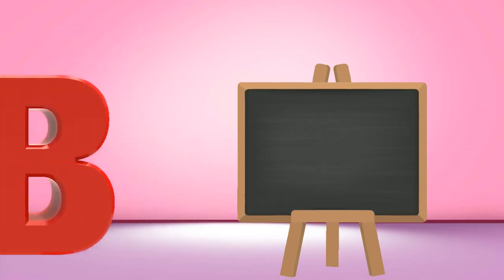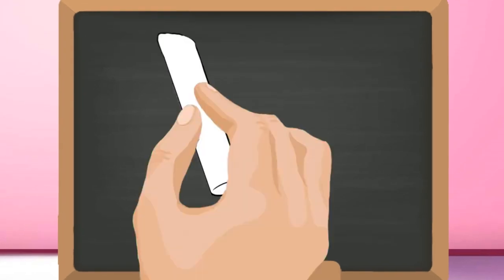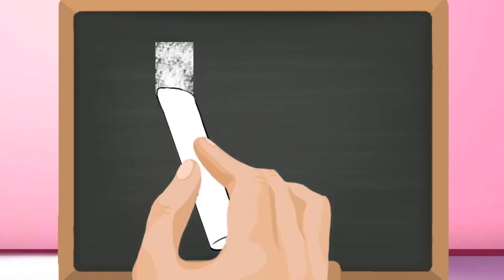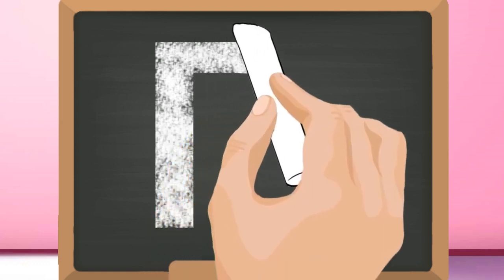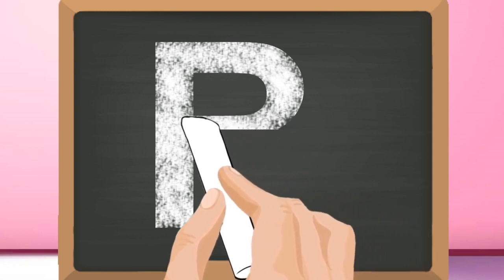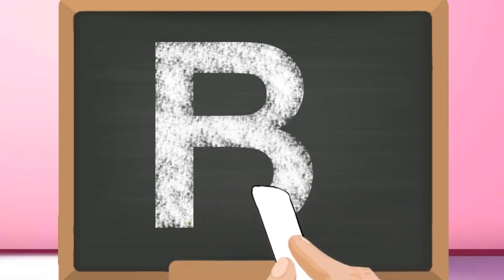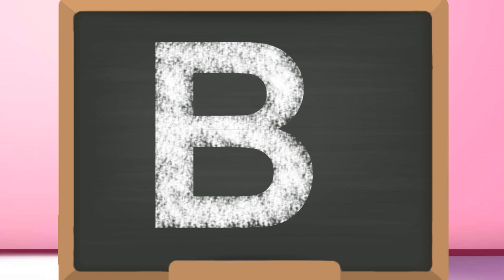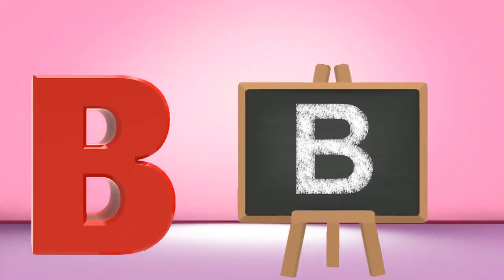B, capital B. Start from the top and draw a standing line down. Go back to the top and draw a curve to the middle. Then draw a curve joining the bottom. Capital B.